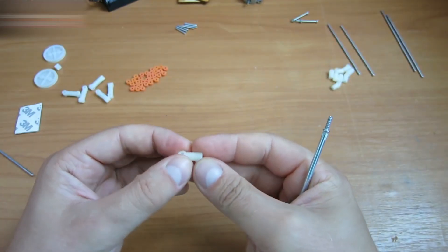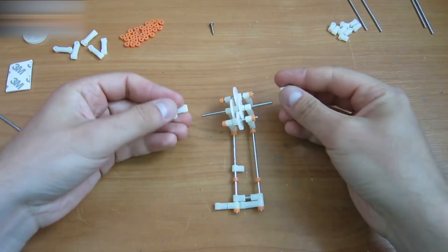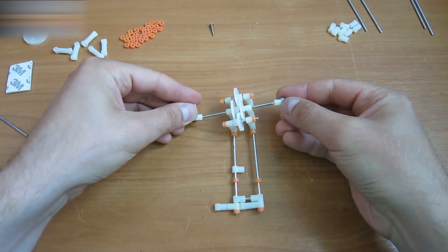Assemble two pairs of white plastic connecting elements with small screws. Put the elements onto the reducer center rod.